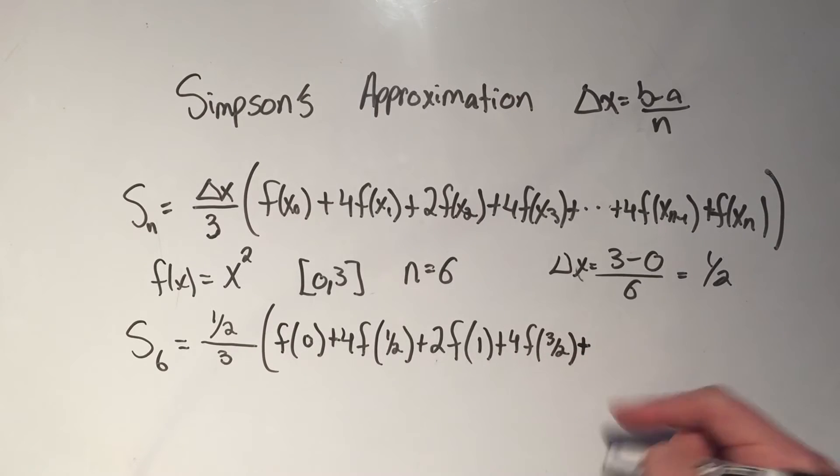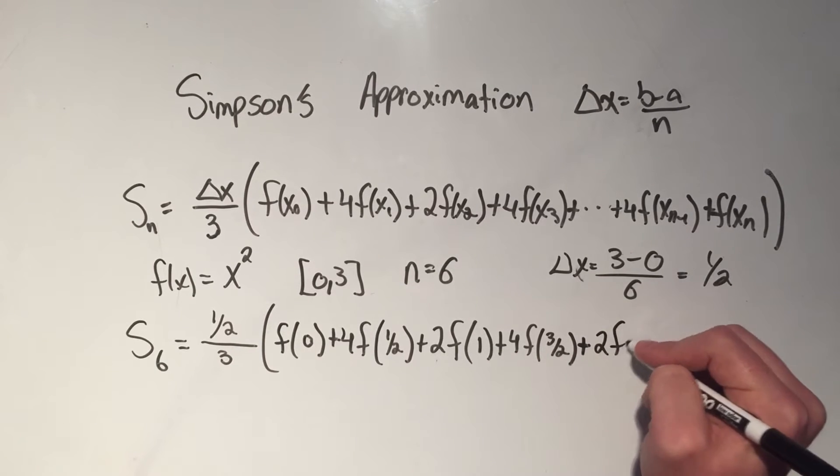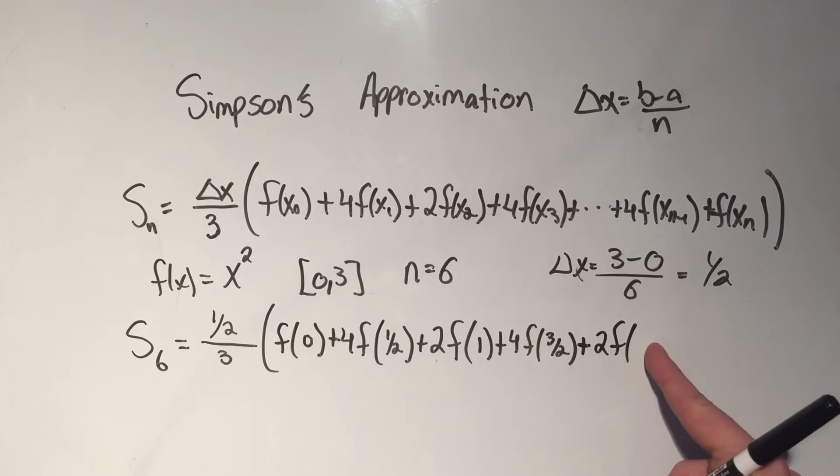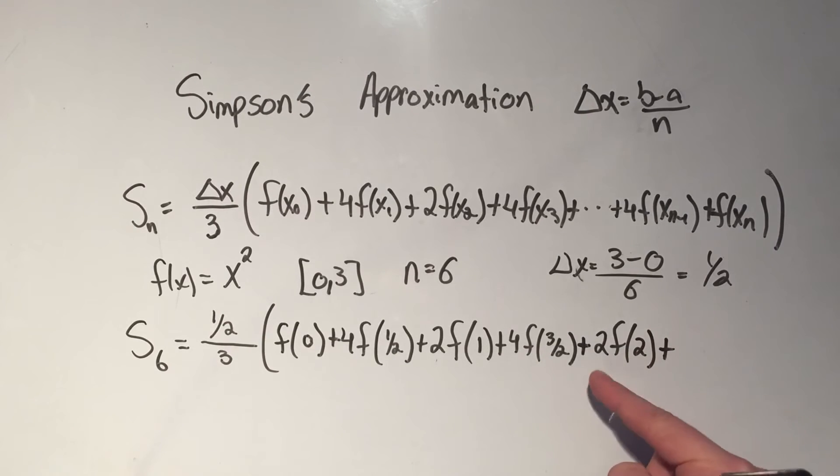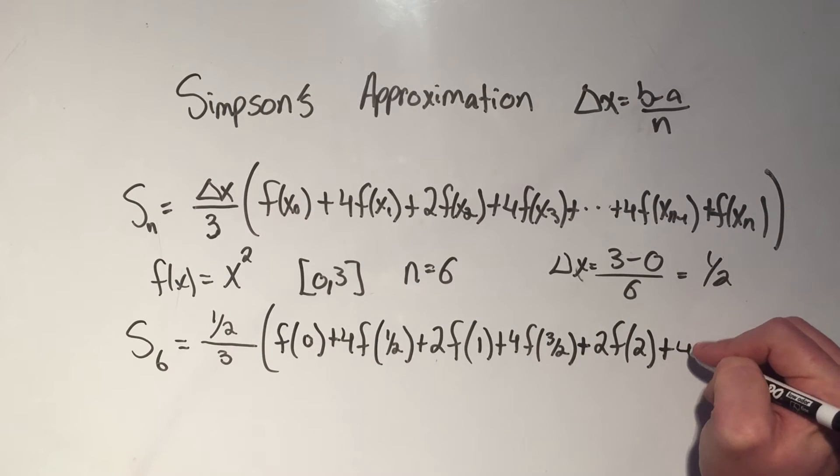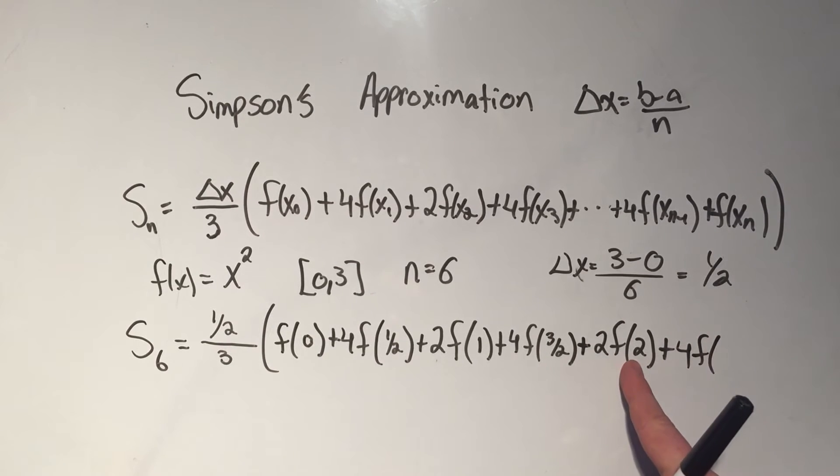I go from 4, now I'm at 2. f of 3 halves plus 1 half is 4 halves, or 2. I switch from 2 to 4.